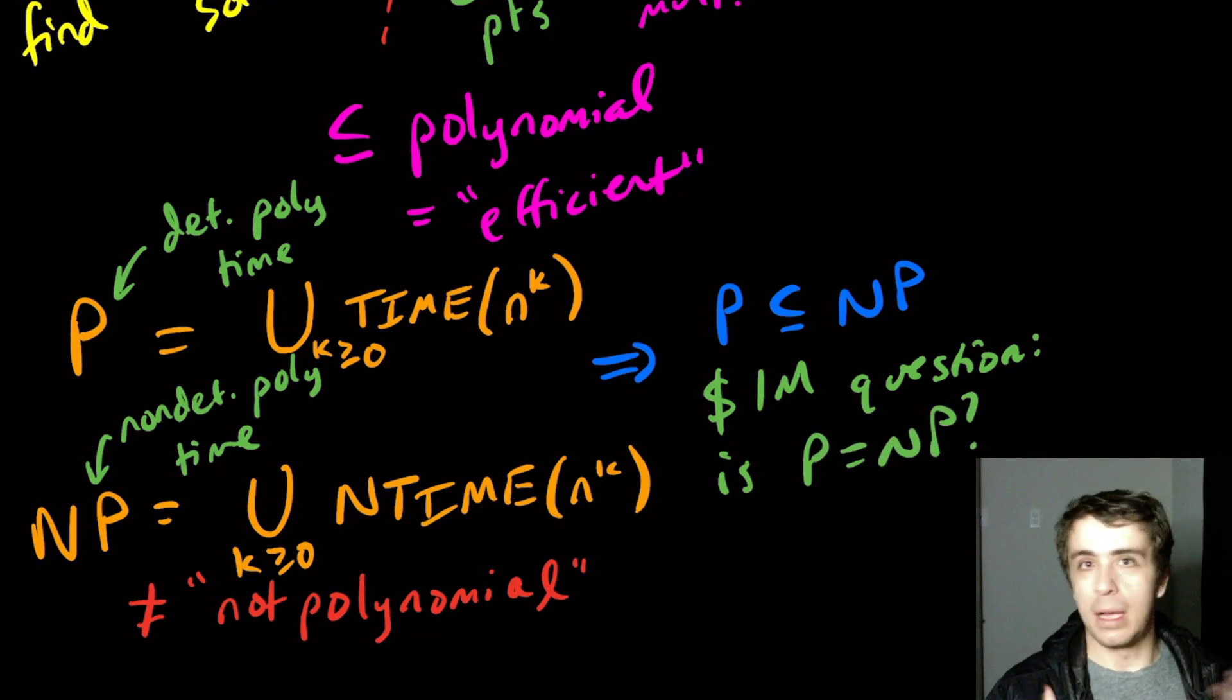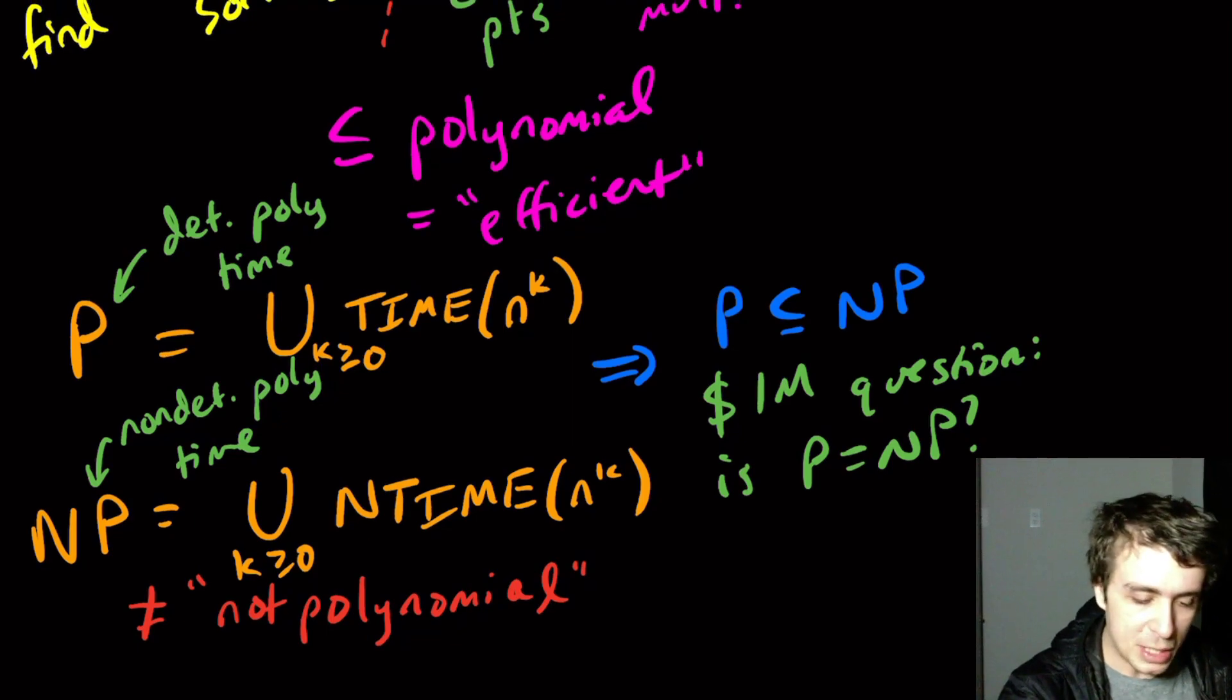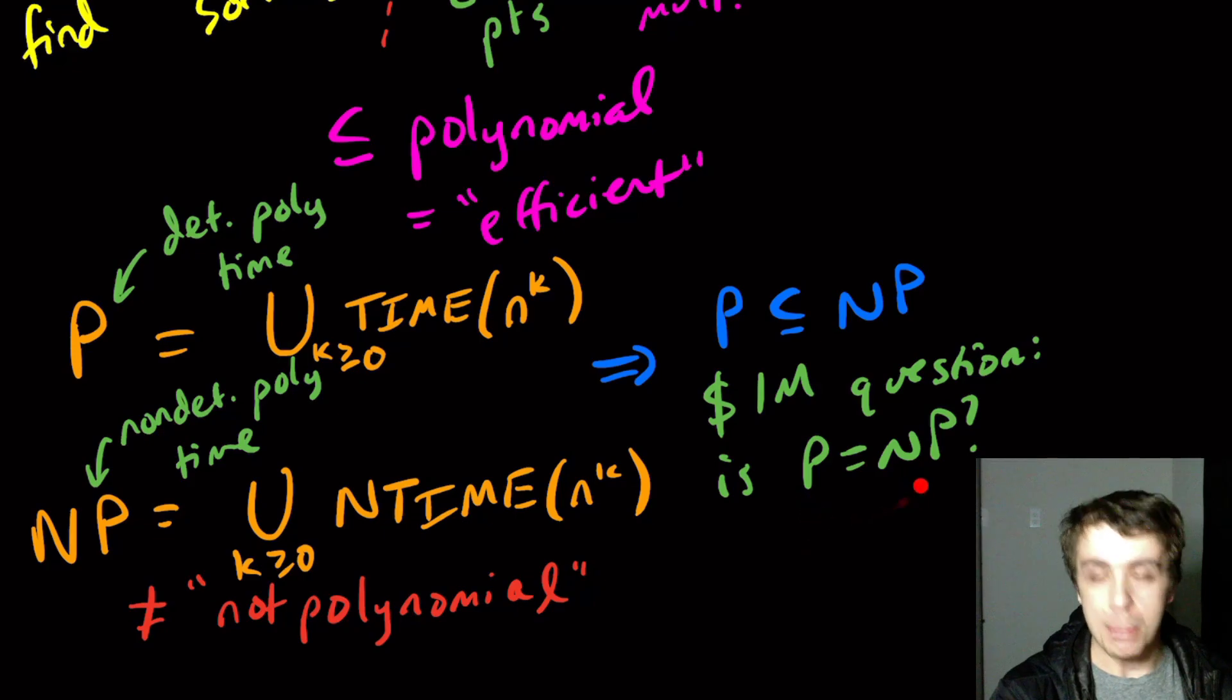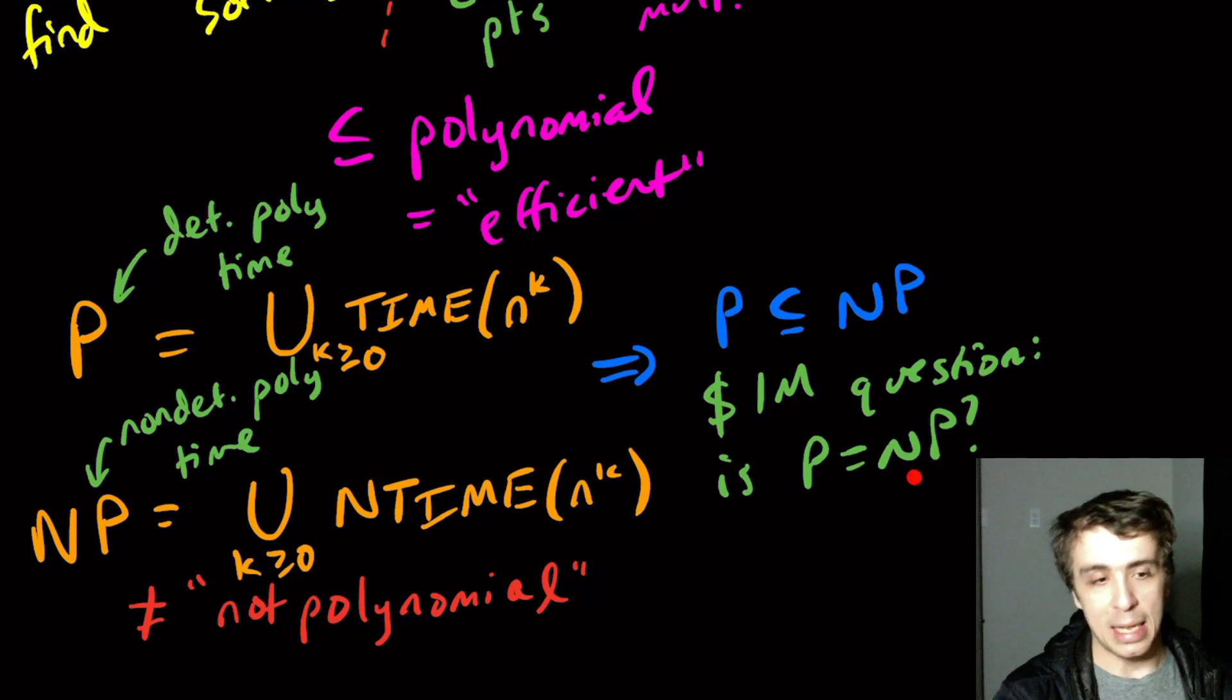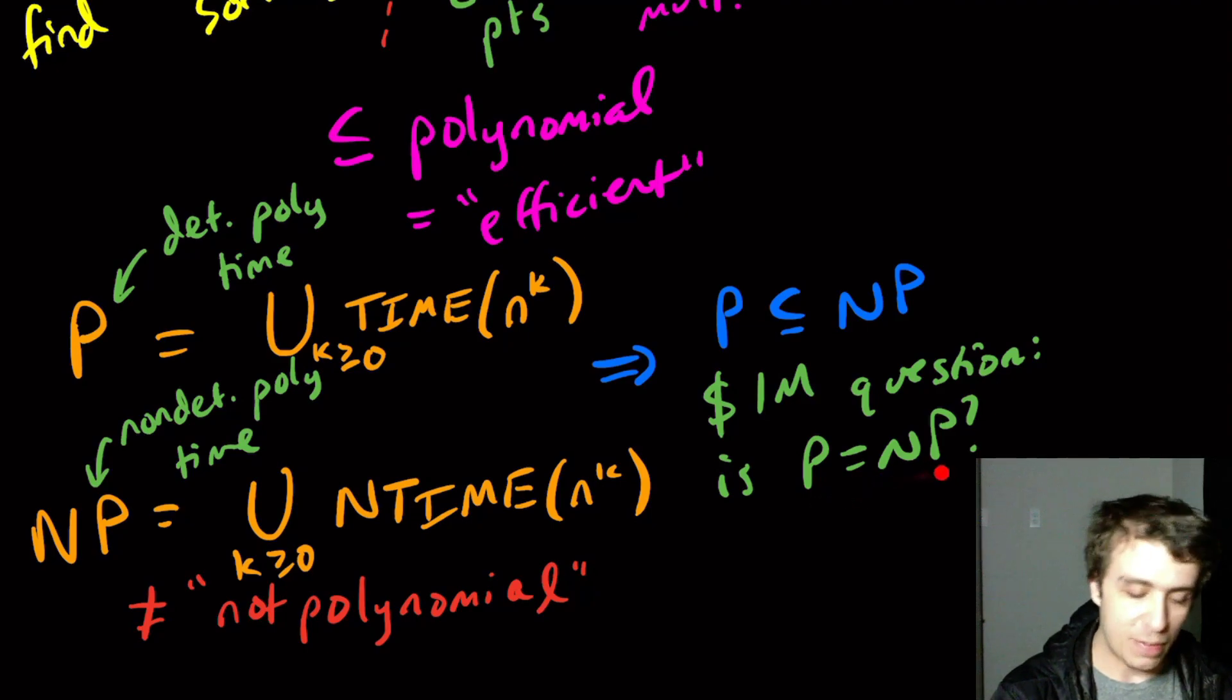The literally million dollar question is: is P equal to NP? Throughout a lot of these upcoming videos, we're going to try to explore some of the reasoning behind why people are interested in this question. Mainly, NP corresponds to checking a solution versus P, which is actually computing a solution. So it's really asking: is checking the solution as fast as finding the solution? If I can check the solution quickly, can I find it efficiently?